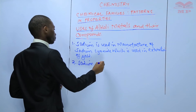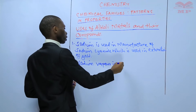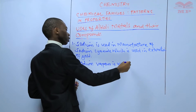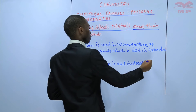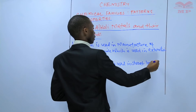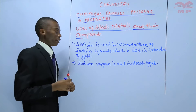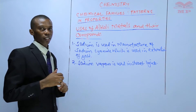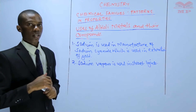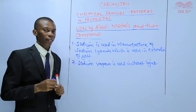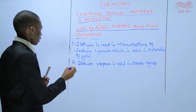Second: sodium vapor is used in street lights because of its yellow color.